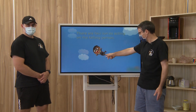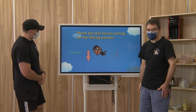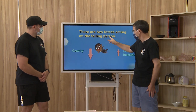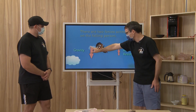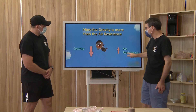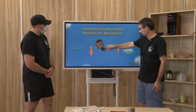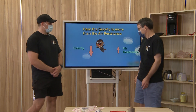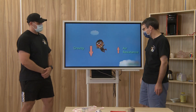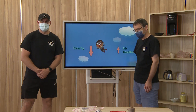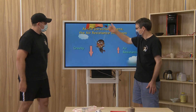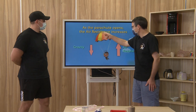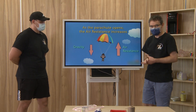So they jump out of an airplane and you're just going to fall straight to the ground. There are two forces acting on the falling person: gravity and air resistance. Right now there's no air resistance, or very little, so he's falling really fast. And he better have something pretty soon. So the parachute opens up, and as the parachute opens, the air resistance increases.